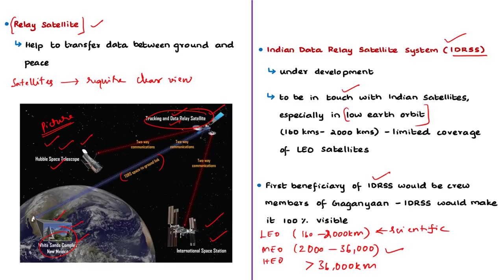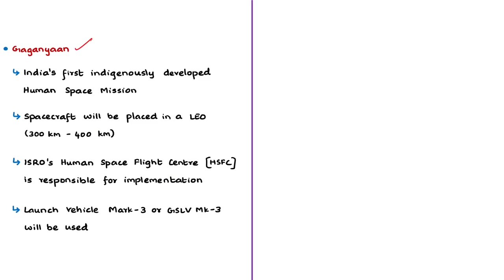ISRO has several advanced low earth orbit missions such as space docking, a space station, and distant expeditions to the Moon, Mars, and Venus. IDRSS will be helpful in monitoring these launches. The first beneficiary would be the prospective crew members of the Gaganyaan mission of 2022, who can be fully and continuously in touch with mission control throughout their travel. IDRSS would make Gaganyaan 100 percent visible, helping in quick decision-making in case of any exigencies.